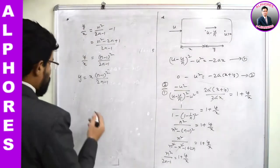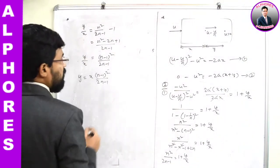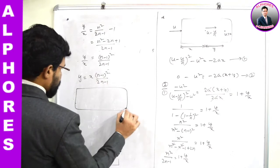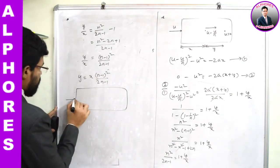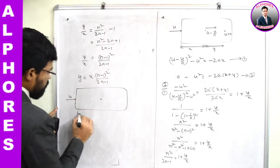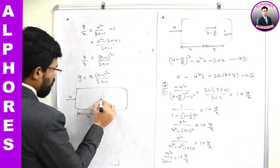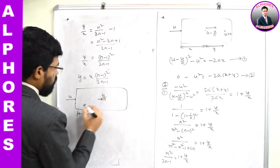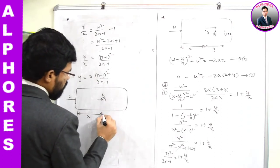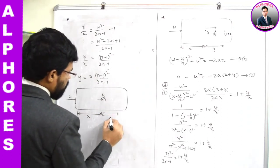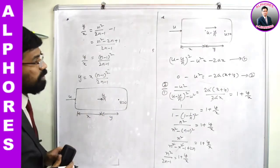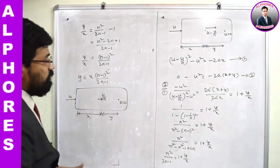If velocity is reduced to 1/nth, then the picture is as follows: initial velocity u. After traveling distance x, velocity has become u/n. Further, let us say it travels distance y somewhere and comes to rest position.